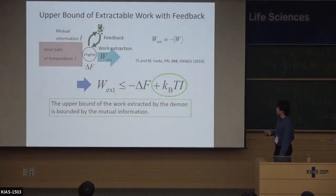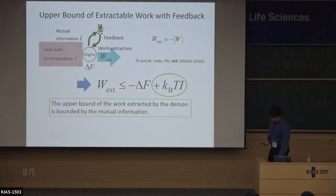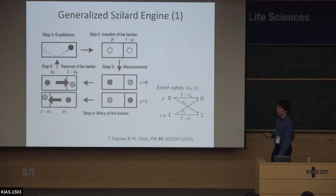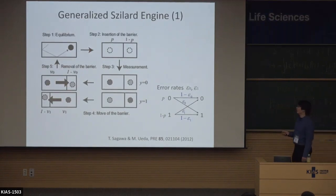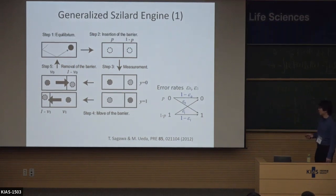The point of this inequality is that the upper bound is given by mutual information. I will now show several models that indeed achieve the upper bound of this inequality. The first example is a Szilard engine with some measurement error. In the original Szilard engine case, we can perfectly distinguish the position of the particle — left or right — but now we assume it has some measurement error.